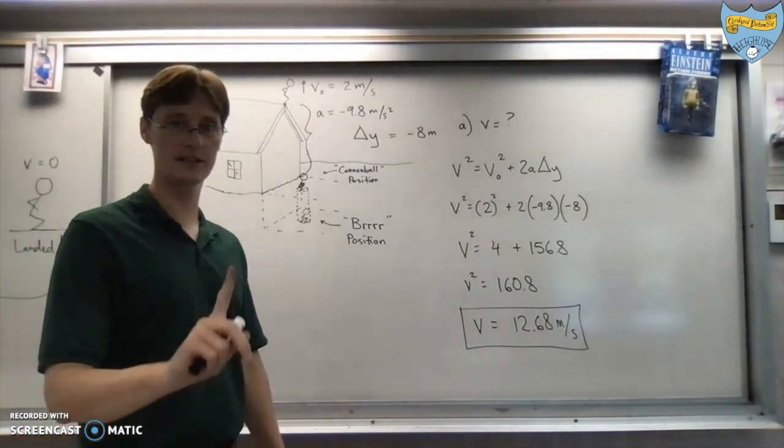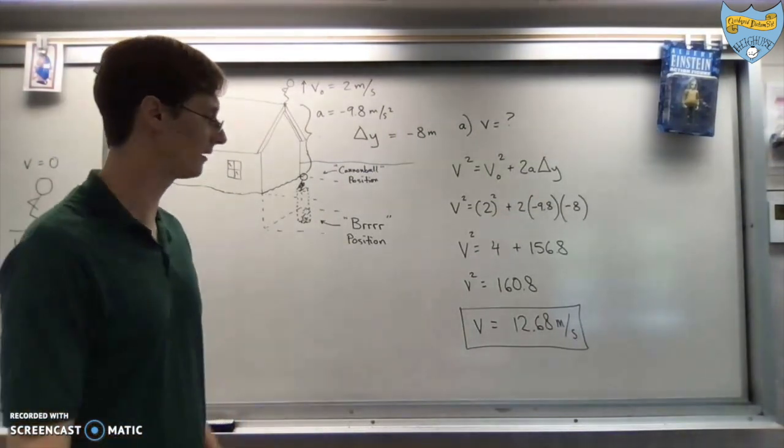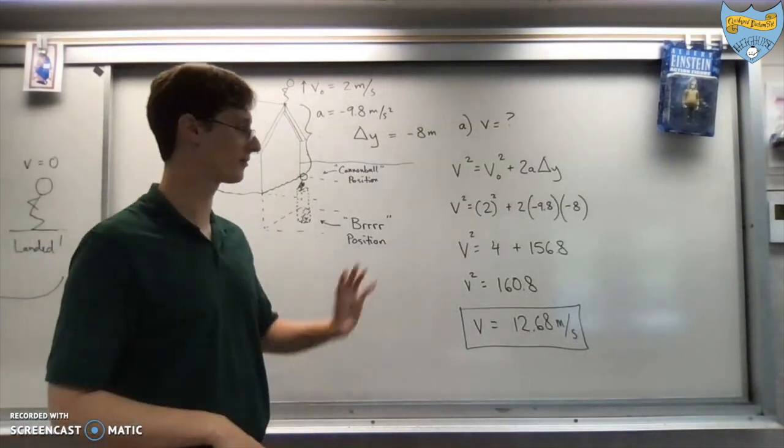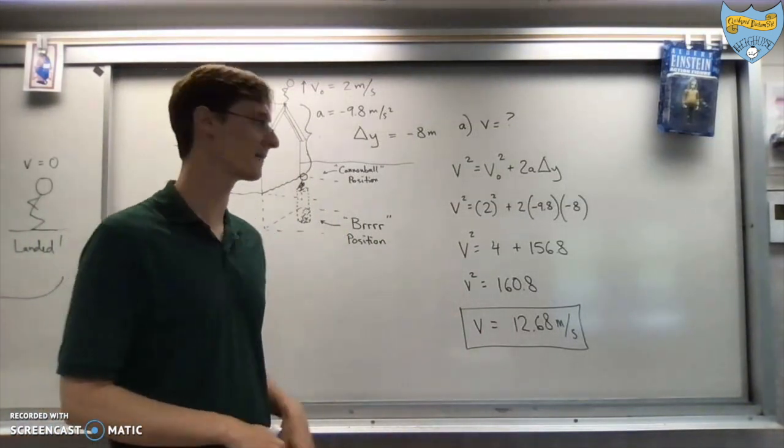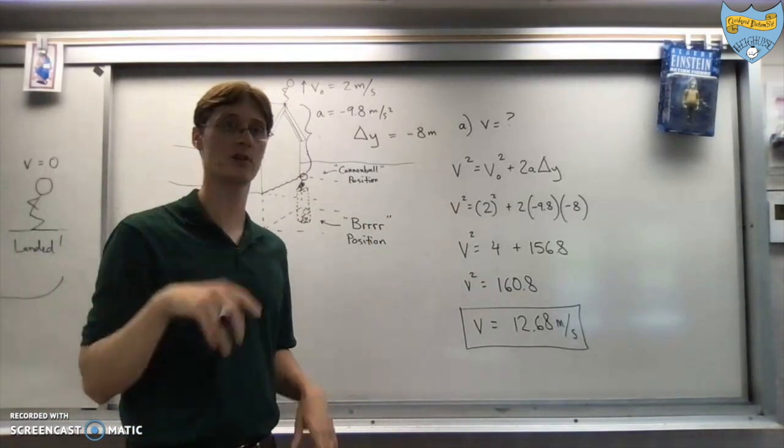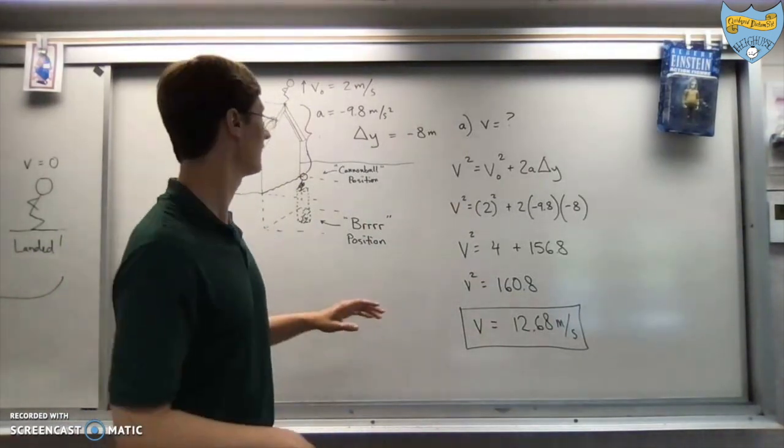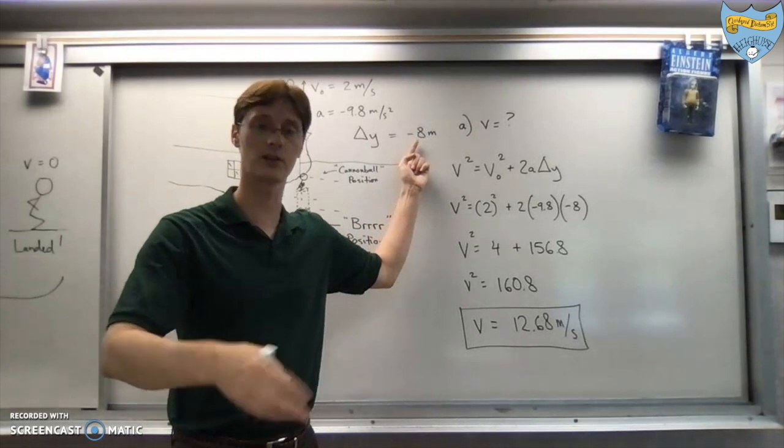Or at least, almost. I want to make a couple comments here before I'm just like, great, and then move on to the next part. Particularly with regard to what might have happened if you had made a mistake here. Because early on, there are usually some blunders that people make in one-dimensional kinematics. And most of them are related to signs.